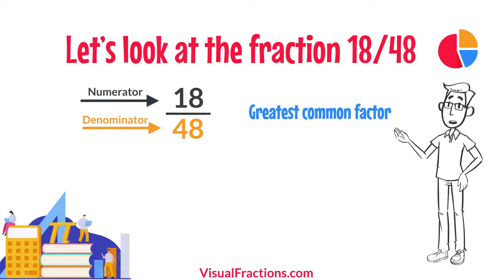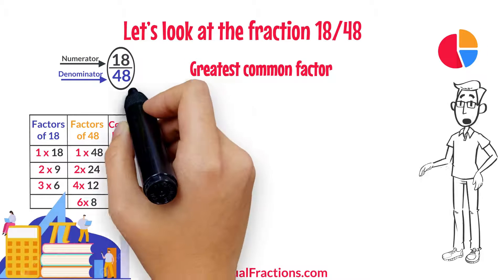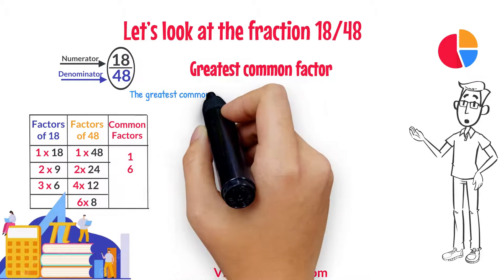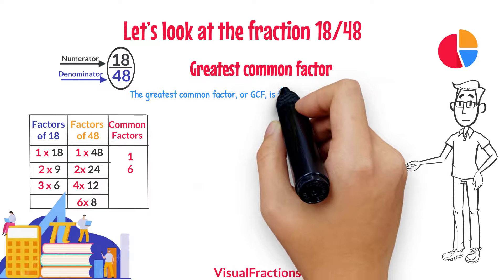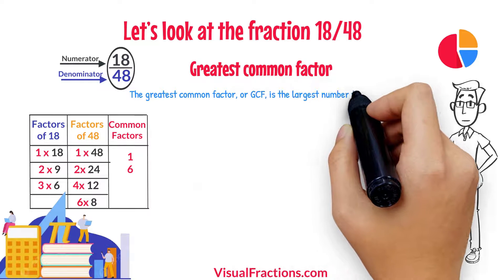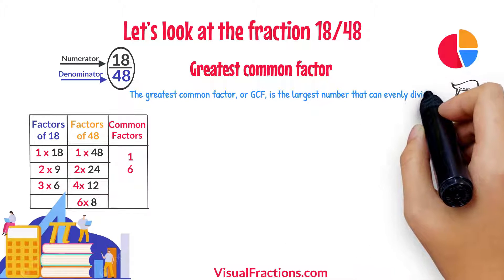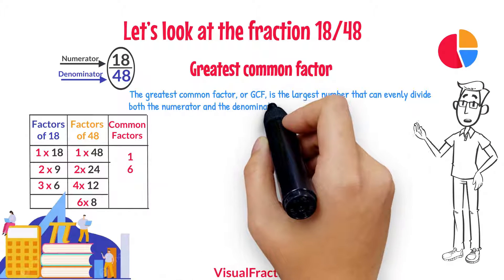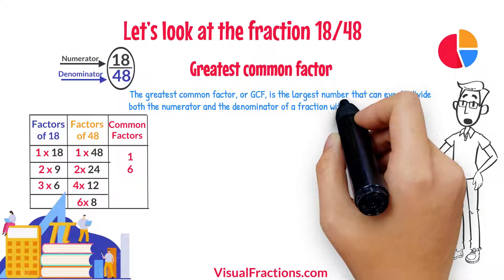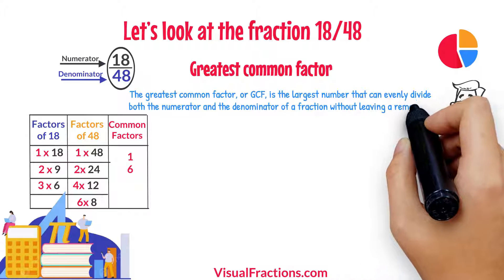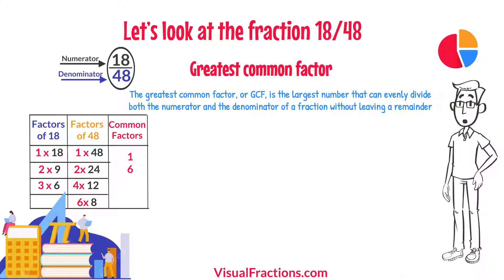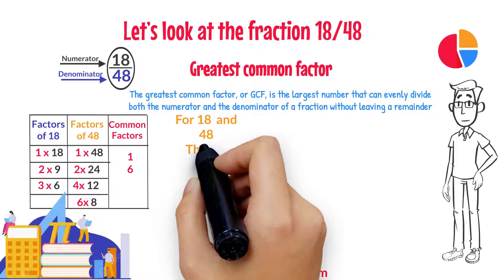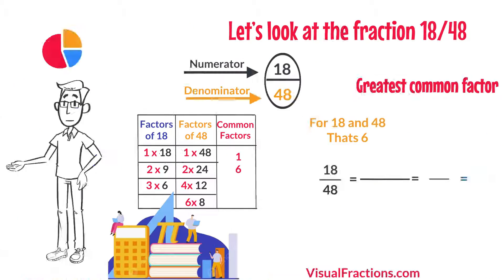The greatest common factor, or GCF, is the largest number that can evenly divide both the numerator and the denominator of a fraction without leaving a remainder. For 18 and 48, that's 6.